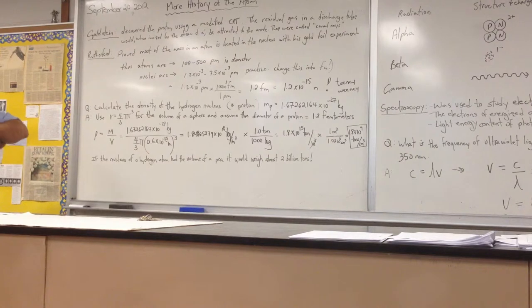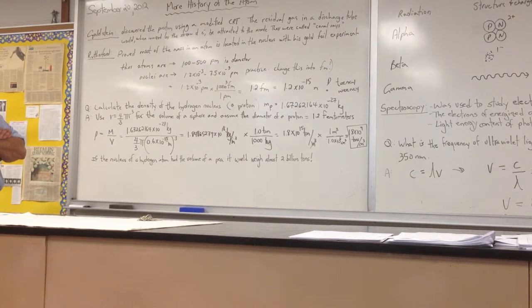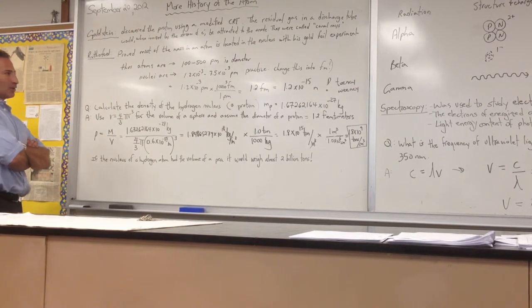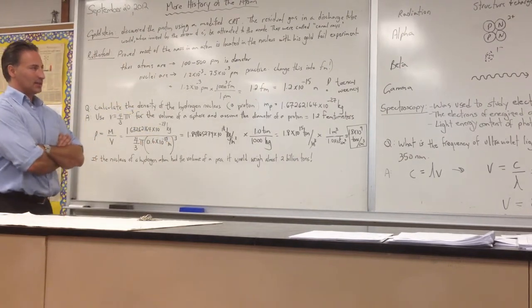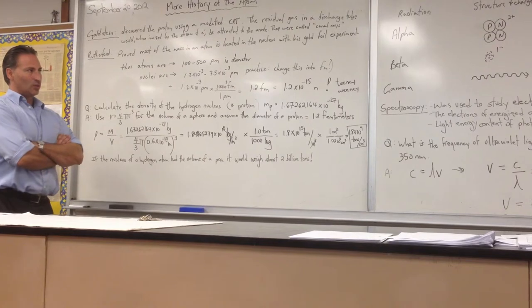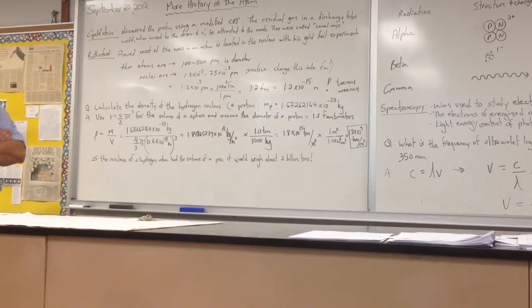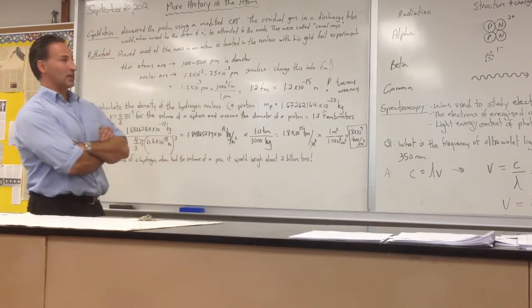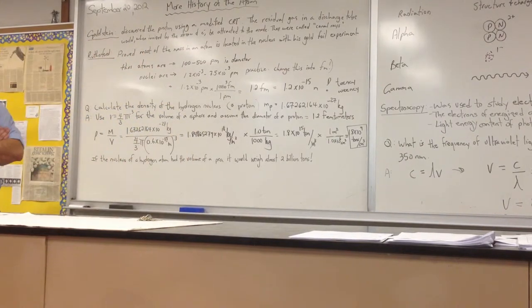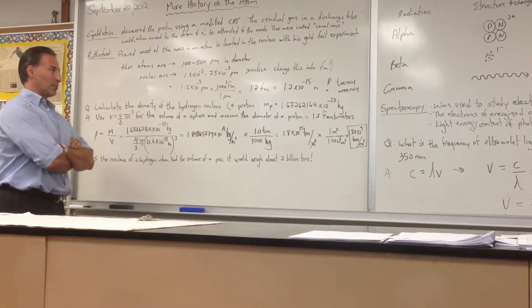Also, Rutherford, as we mentioned earlier, proved that most of the mass in an atom is located in the nucleus with his gold foil experiment. He bombarded gold foil with alpha particles, which is - I said something in the last video that was incorrect. I said that the gold foil should have stopped the alpha particles. In fact, the alpha particles should be able to blast right through the very thin gold foil because it's the equivalent of throwing a shot put through a very thin piece of paper.